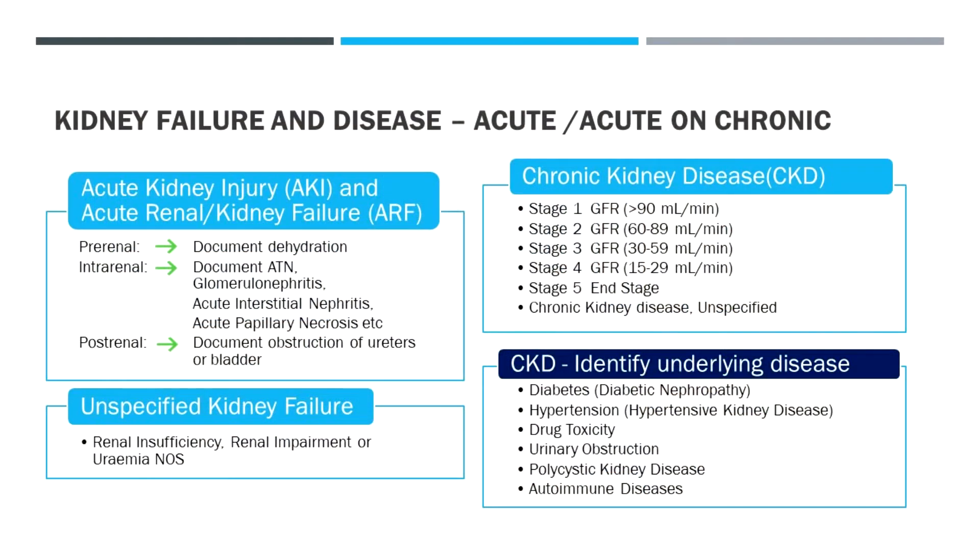Within kidney failure, kidney disease, or kidney injury, all these terms are somewhat synonymous. We can look at acute kidney injury, or AKI — previously called acute renal failure. I prefer the AKI term because it implies it is at least somewhat reversible. We classify the cause as pre-renal, intra-renal, and post-renal, and where we often go wrong is not documenting the actual cause within those categories. There may sometimes be more than one contributing cause.